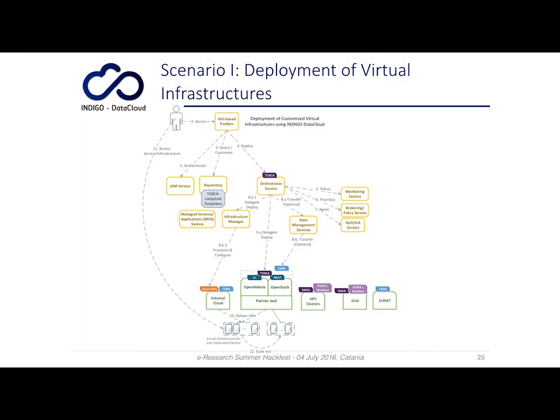Once the orchestrator has decided the target site, the real deployment is delegated to the infrastructure manager in the case of OpenNebula and external clouds that do not support Tosca at the PaaS level, or delegated to Heat in the case of OpenStack, via an instance of the infrastructure manager deployed at the OpenNebula site.